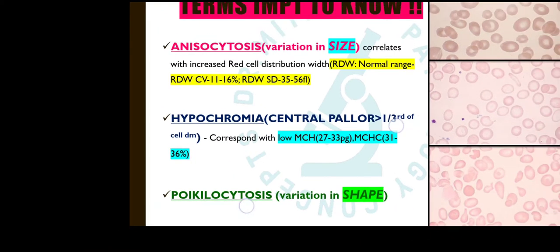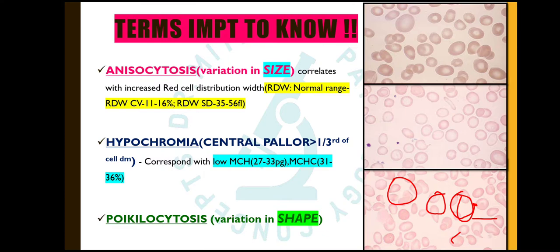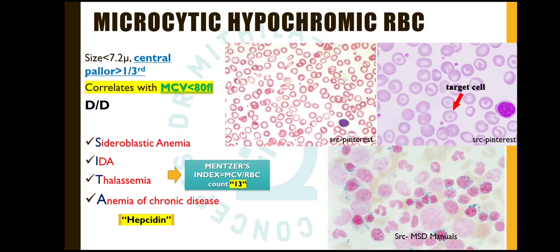These values are important for problem-based questions, so we should know the normal ranges. The third term is poikilocytosis, which is the variation in the shape of the RBC. In the picture, you can see variable shapes — some cells are round, some are teardrop-shaped, and some are fragmented RBCs. So these three terms we should know: anisocytosis is variation in size correlating with RDW; hypochromia is increased central pallor more than one third correlating with low MCH and MCHC; and poikilocytosis is variation in shape.